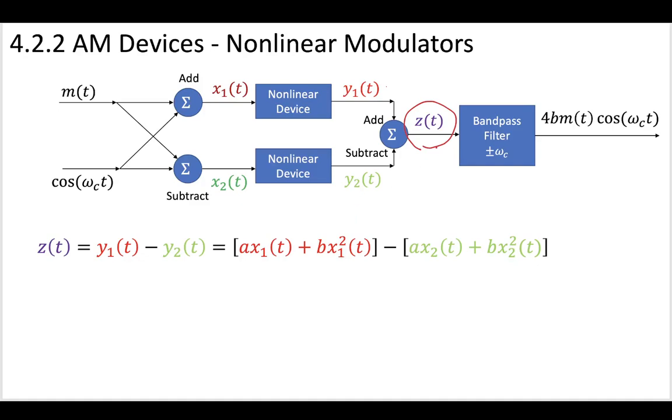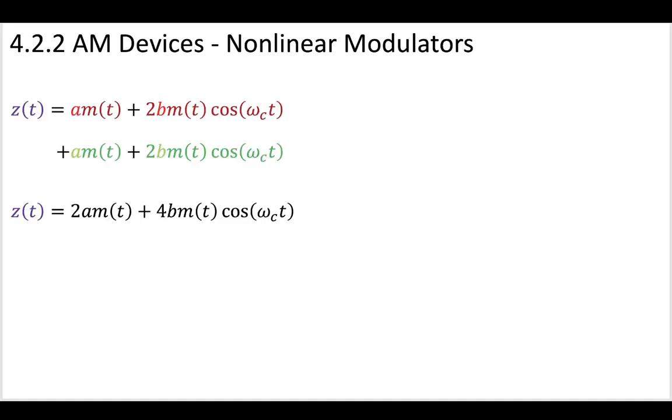Now, when we got to this z term, we started to notice that we were going to be pretty optimistic about our z because it had one term that was the message by itself and another term that was the cosine with that carrier wave being multiplied by our message. So we have message with some constant coefficients and then a modulated message with some other constant coefficients. This is really good, so let's take a look.